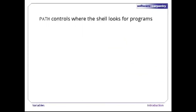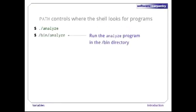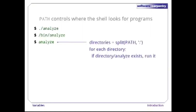If we type a command like './analyze' with a specific directory in the path, the shell runs the program that path specifies. Similarly, if we type '/bin/analyze', the shell runs that specific program. But what should the shell do if we just type 'analyze'? There are at least two things it could run. Its rule is simple: the shell checks each directory in the PATH variable in turn, looking for a program with the requested name. As soon as it finds a match, it stops searching and runs the program.